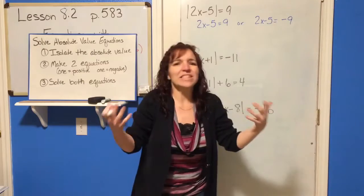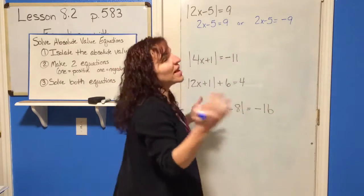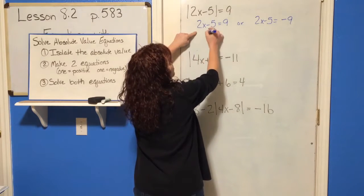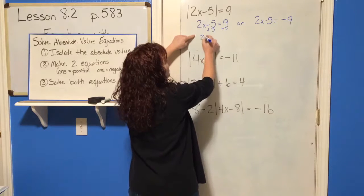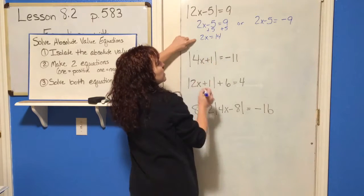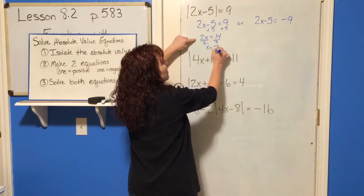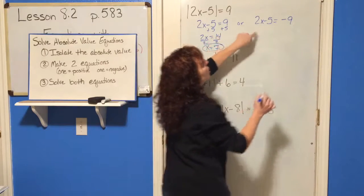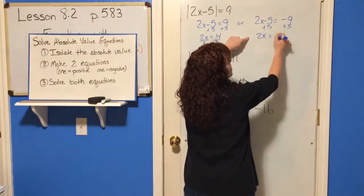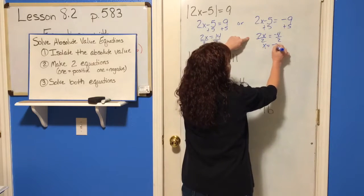So set up two equations — one equals the positive of your value and one equals the negative. Then just solve the equations. Add 5 to both sides: 2x equals 14, divide by 2, x equals 7. Or add 5 to both sides of the second equation: 2x equals negative 4, divide by 2, x equals negative 2.